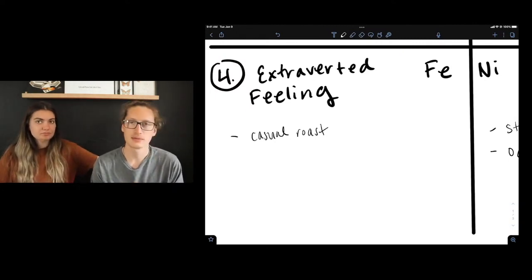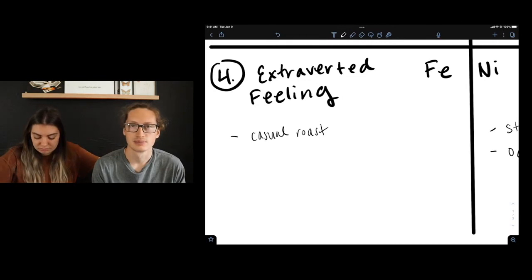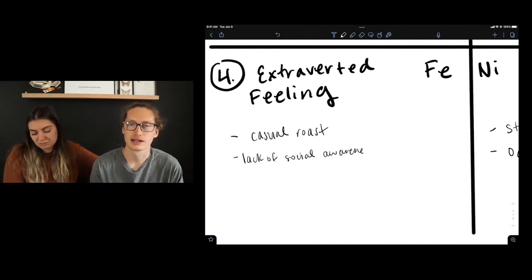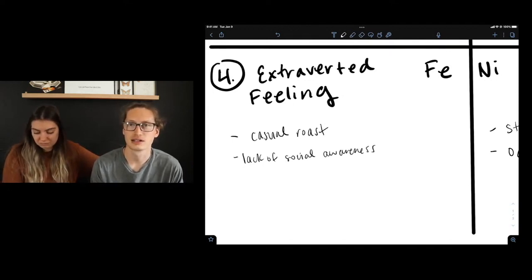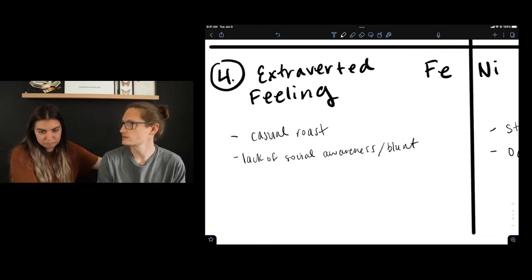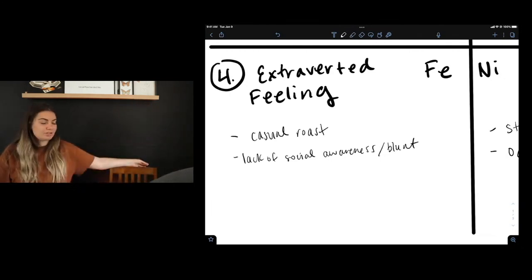Yeah. There can be, again, with ISTPs, a lack of social awareness. So I think that TI dominant cares about directness and, but it can come off blunt. It can say things that hurt people's feelings without even noticing that it's hurting people's feelings. So I've noticed that sometimes. Yeah. Charge that. Oh yeah. We've got to charge your thing.